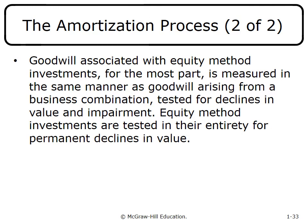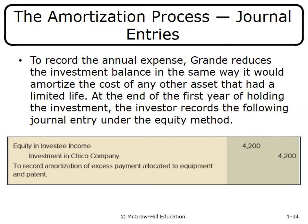Any goodwill associated with equity method investments has an indefinite life and is not amortized, though we test it for impairment and write it down if needed. To record the $4,200 amortization, we debit Equity in Investee Income—reducing the income recognized from the investee—and credit the Investment account, also decreasing its carrying value.